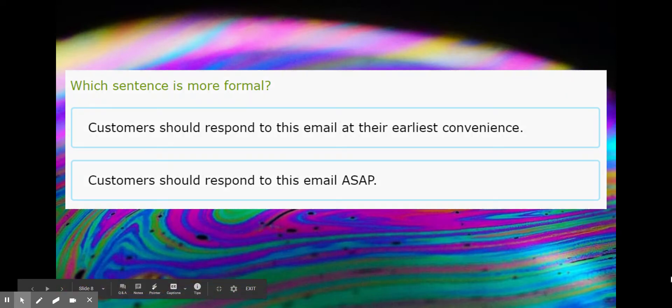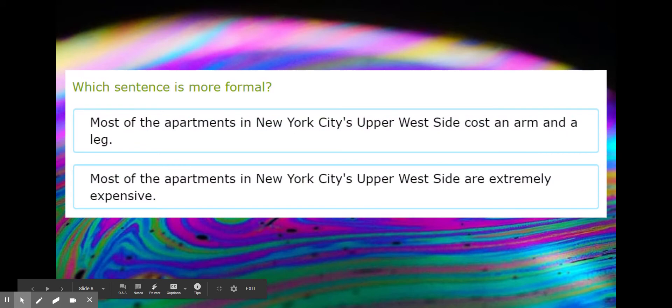Which of these is more formal? 'Most apartments in New York City's Upper West Side cost an arm and a leg' or 'Most of the apartments in New York City's Upper West Side are extremely expensive'? 'Cost an arm and a leg' is a saying, it's a little cliché, but what you want to do is say exactly what you mean - they are expensive. So the bottom one is your answer.